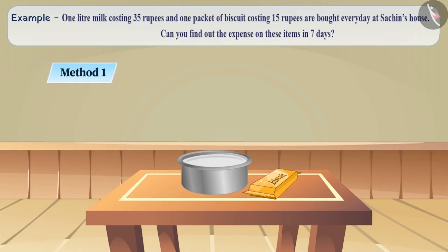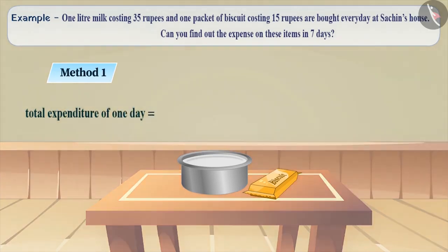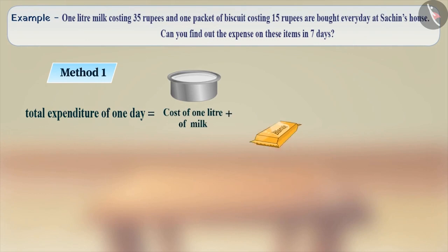Method 1: To solve this, we will find the total expenditure of one day, i.e., the cost of one litre of milk plus the cost of one packet of biscuits, 35 plus 15.